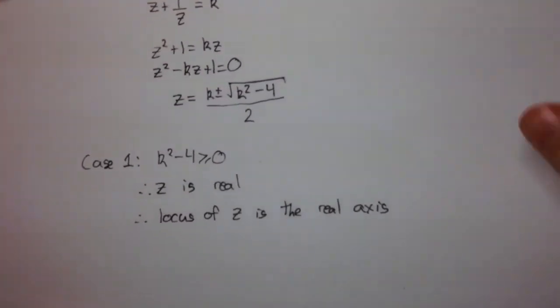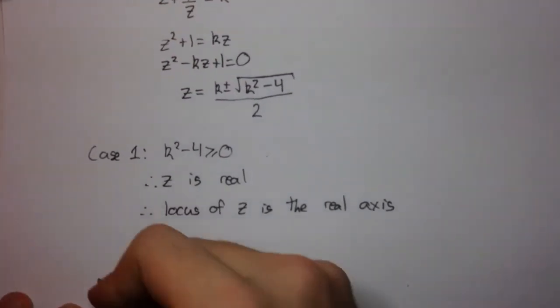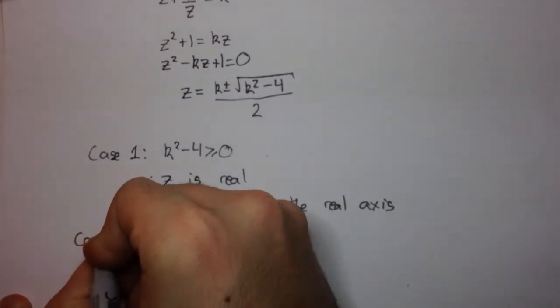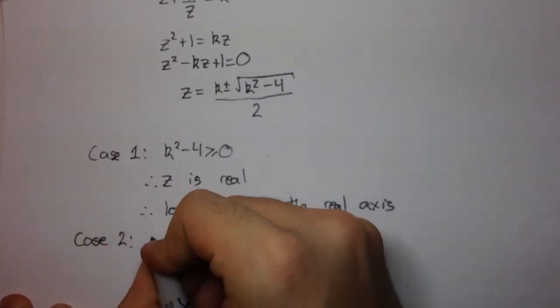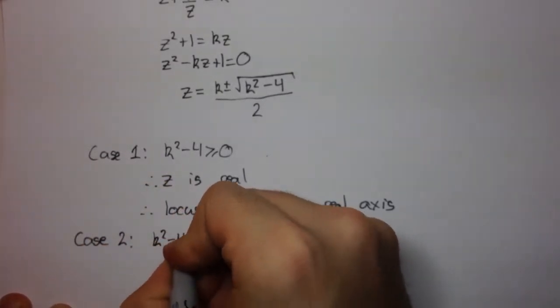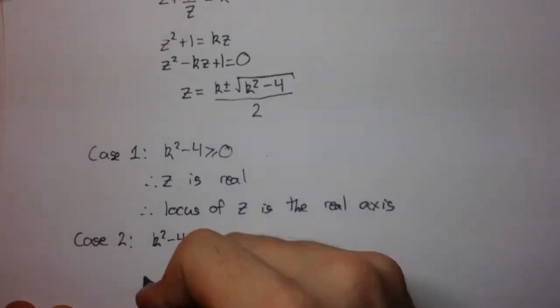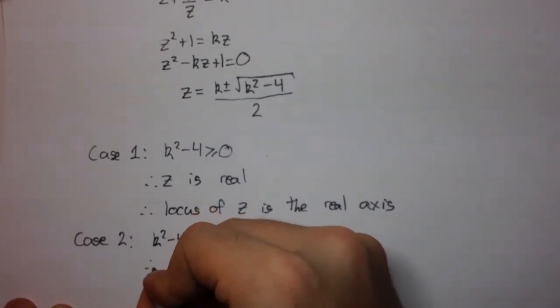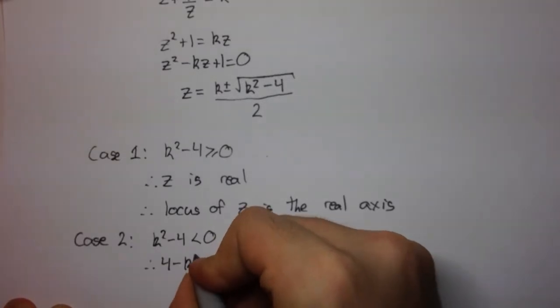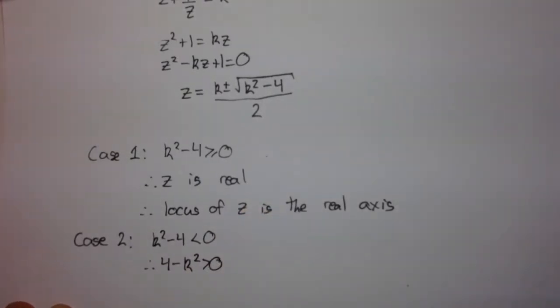Okay, now what about case 2? Well, case 2 is k squared minus 4 is less than 0. Okay, now if it's less than 0, what can we say? We can say that, first of all, we can say that 4 minus k squared is greater than 0.